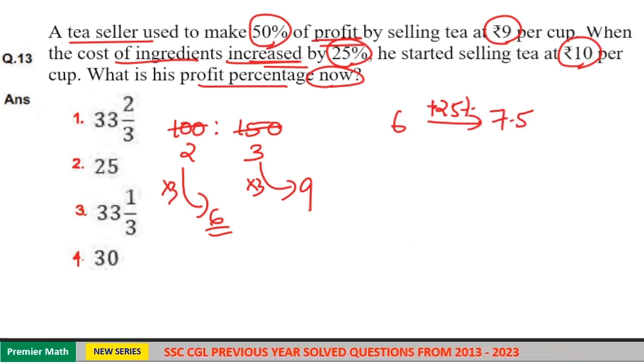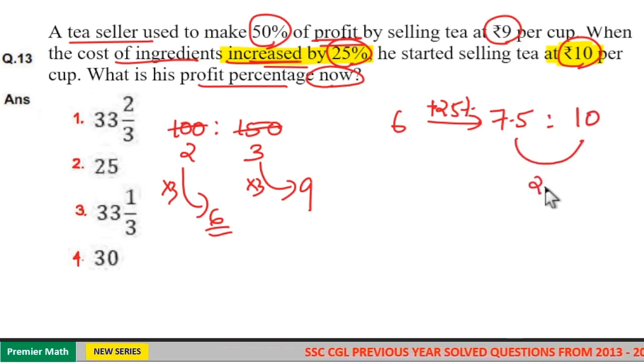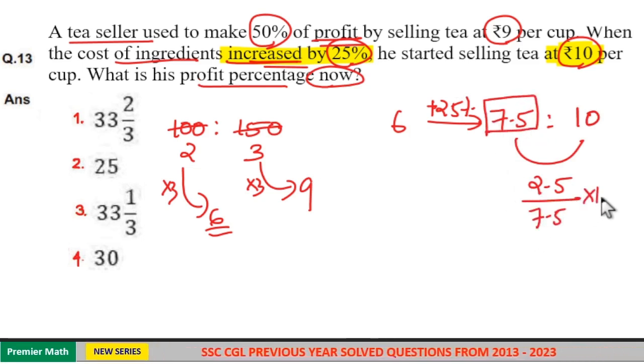Now the cost price is 7.5 rupees. When cost price increased by 25 percent, he sells it at 10 per cup, so now selling price equals 10 rupees. The difference between cost price and selling price is 2.5 rupees, and this difference is generated out of the 7.5 rupees into 100.